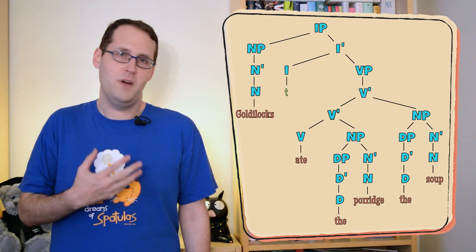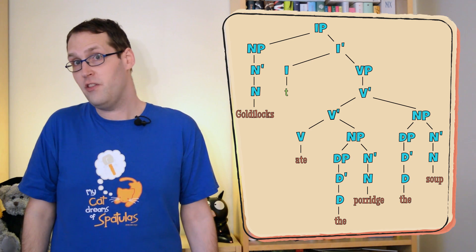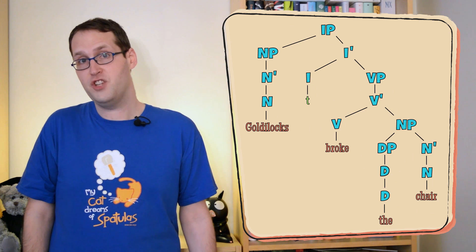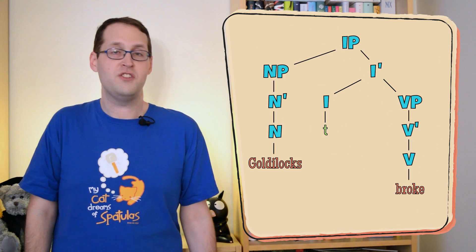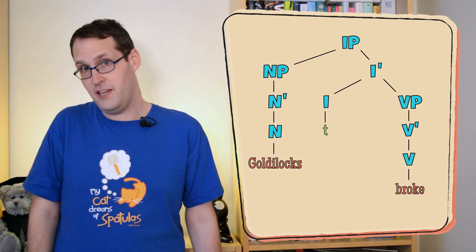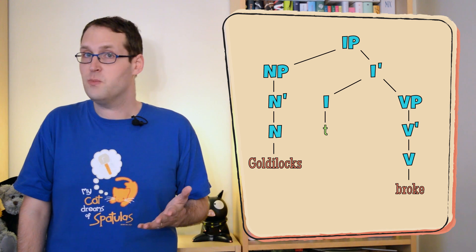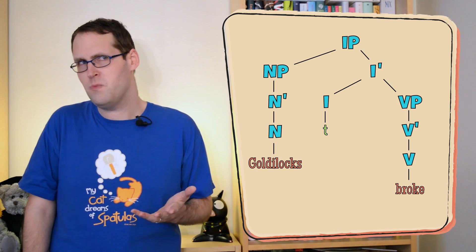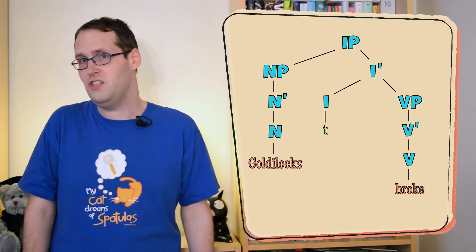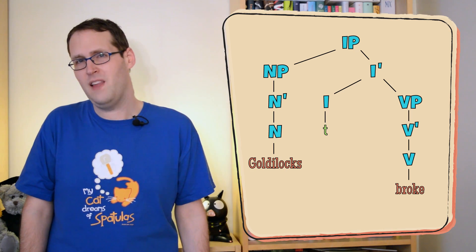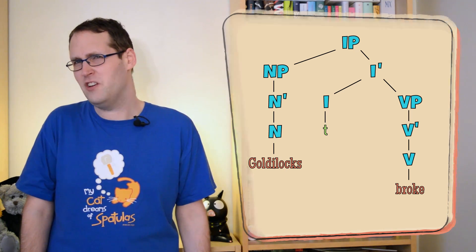Things don't get much better if we try pruning our tree, either. Take for example the sentence 'Goldilocks broke the chair.' If we pluck out 'the chair,' we still get something that fits our X-Bar template. The problem is that 'Goldilocks broke' barely qualifies as English, unless Goldilocks is an inanimate object. Or unless she's playing pool. Language can get kinda weird at the edges.